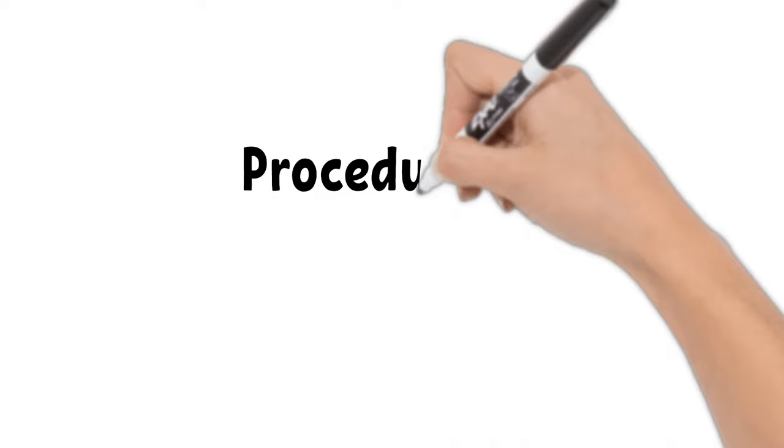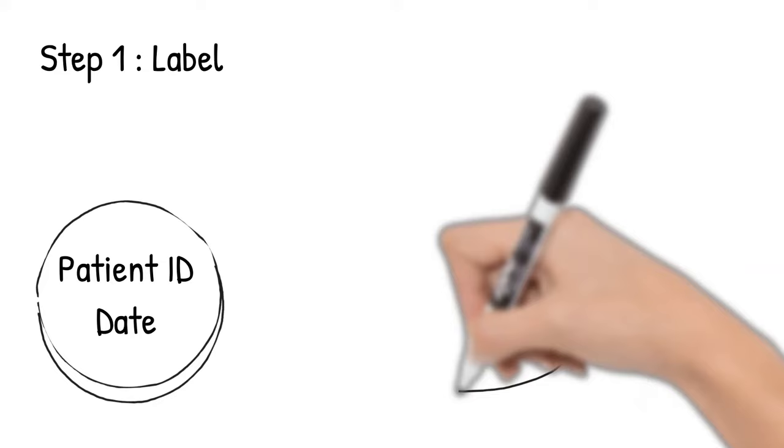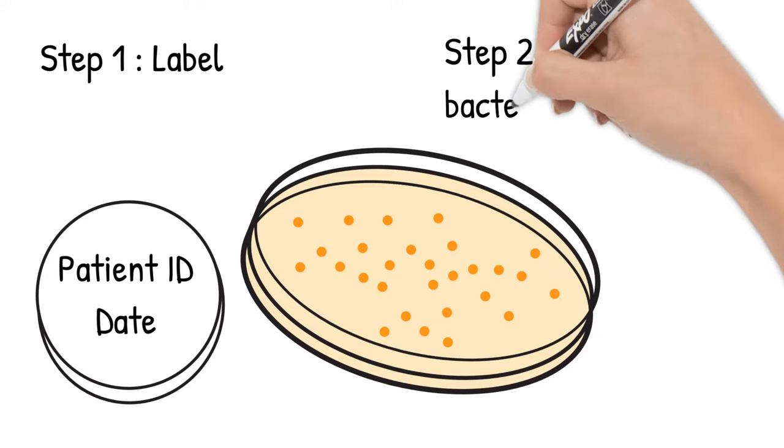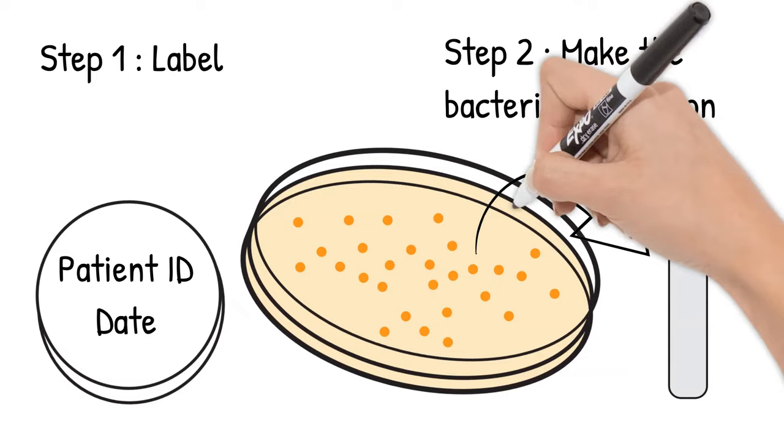Procedures for antibiotic sensitivity tests by Kirby-Bauer methods. Step 1: Label the plate. Step 2: Make the bacteria suspension by selecting a few isolated colonies of bacteria and suspend the bacteria in media broth or saline.